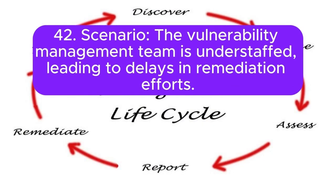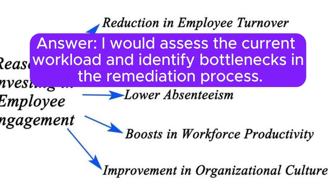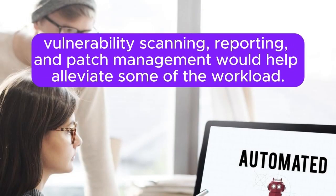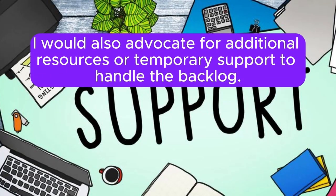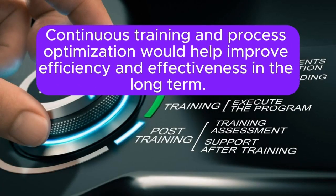Scenario 42: The vulnerability management team is understaffed, leading to delays in remediation efforts. How do you address this issue? I would assess the current workload and identify bottlenecks in the remediation process. Implementing automation for routine tasks such as vulnerability scanning, reporting, and patch management would help alleviate some of the workload. Prioritizing vulnerabilities based on their criticality and impact would ensure that the most significant threats are addressed first. I would also advocate for additional resources or temporary support to handle the backlog. Continuous training and process optimization would help improve efficiency and effectiveness in the long term.